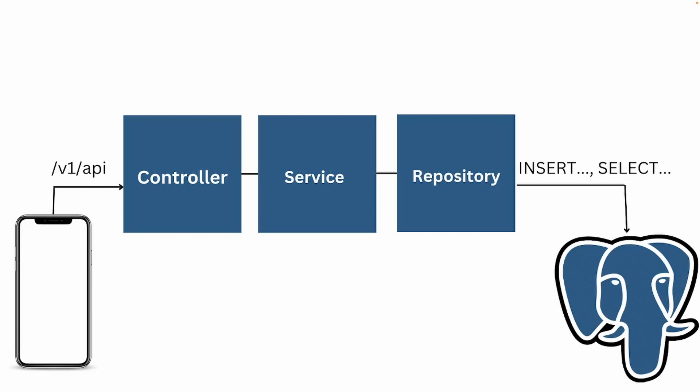That next step is a structure called the repository, which is used to communicate with the database. We're using Postgres as our database. Since we're using the Postgres driver, it comes with defined mechanisms to store, retrieve, update, and delete information internally — we don't even have to write SQL statements. We just call specific methods that are already defined. Spring Boot makes that easy for us; we just need the proper dependency, which we already added.